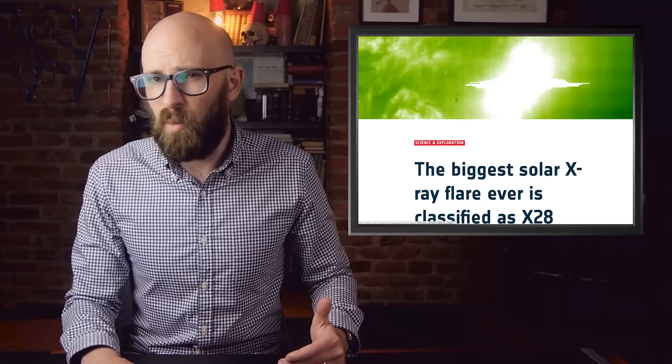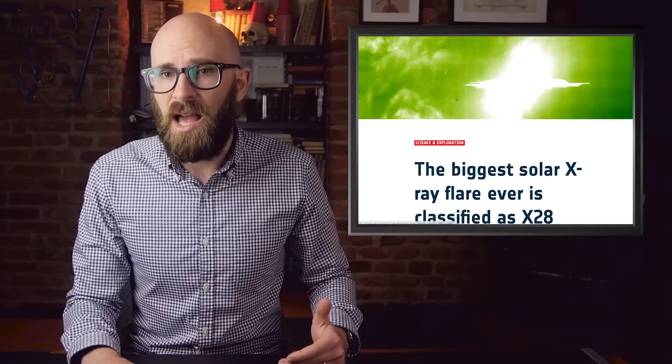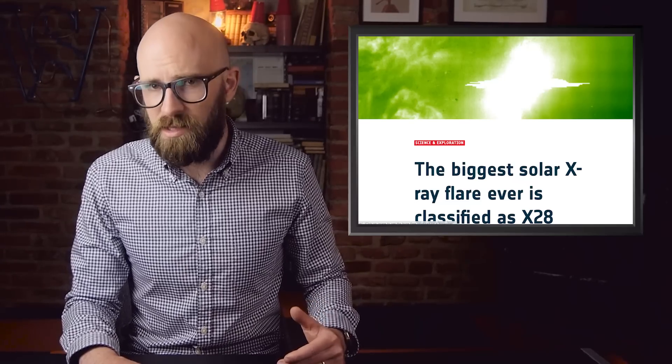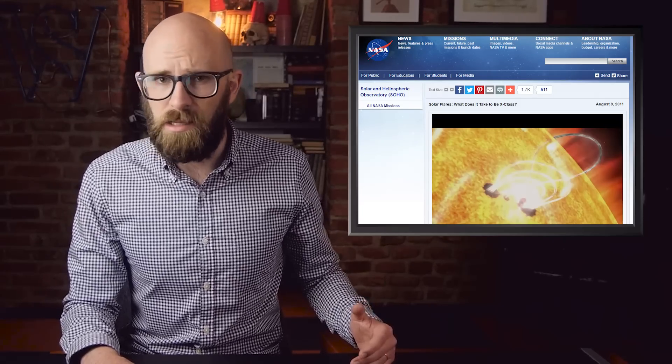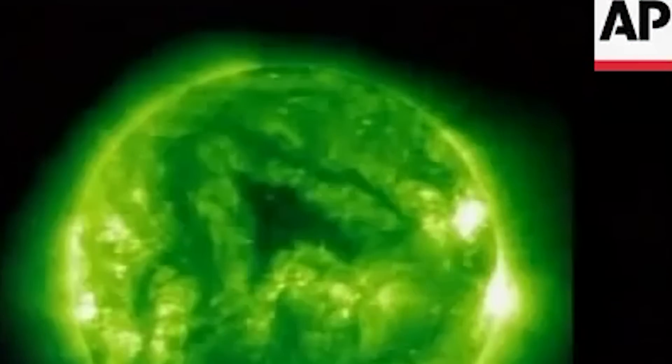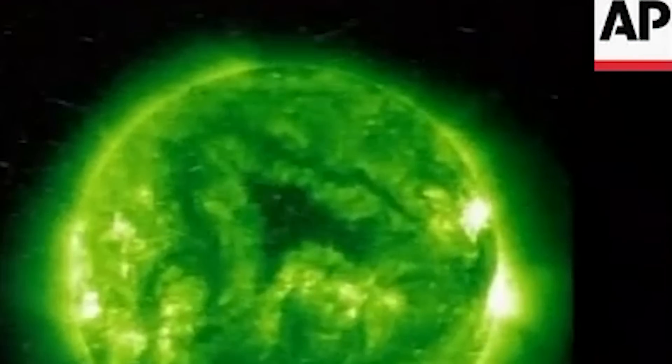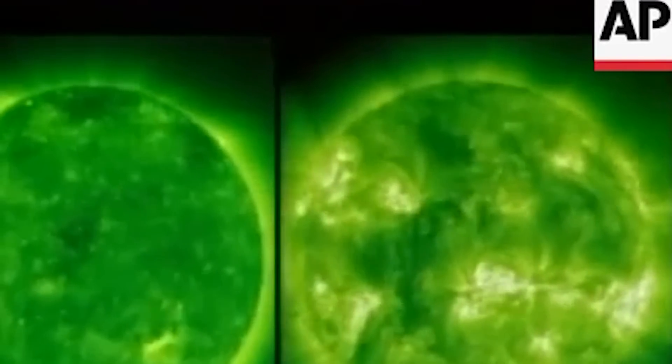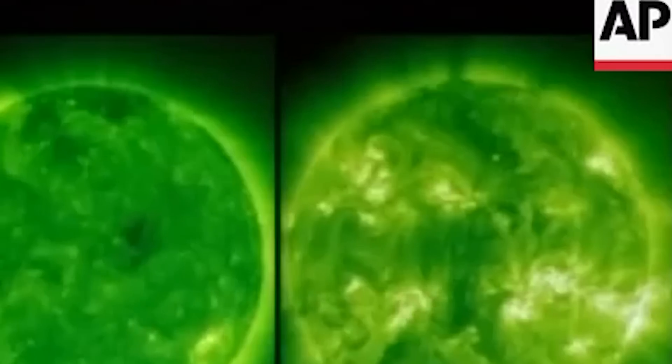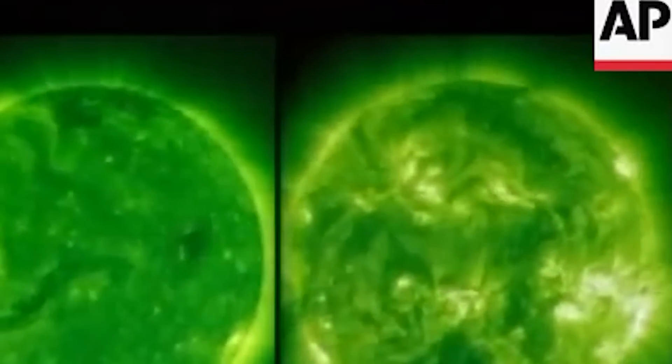Understanding the energy released during these massive flares is not easy, because it's so much greater than anything we can experience here on Earth. An X-level solar flare has been compared to hydrogen bombs in terms of energy output. More specifically, an X-level solar flare releases the same amount as roughly one billion hydrogen bombs. And just to be clear, one hydrogen bomb is roughly ten times more powerful than the atomic bombs dropped during the Second World War.